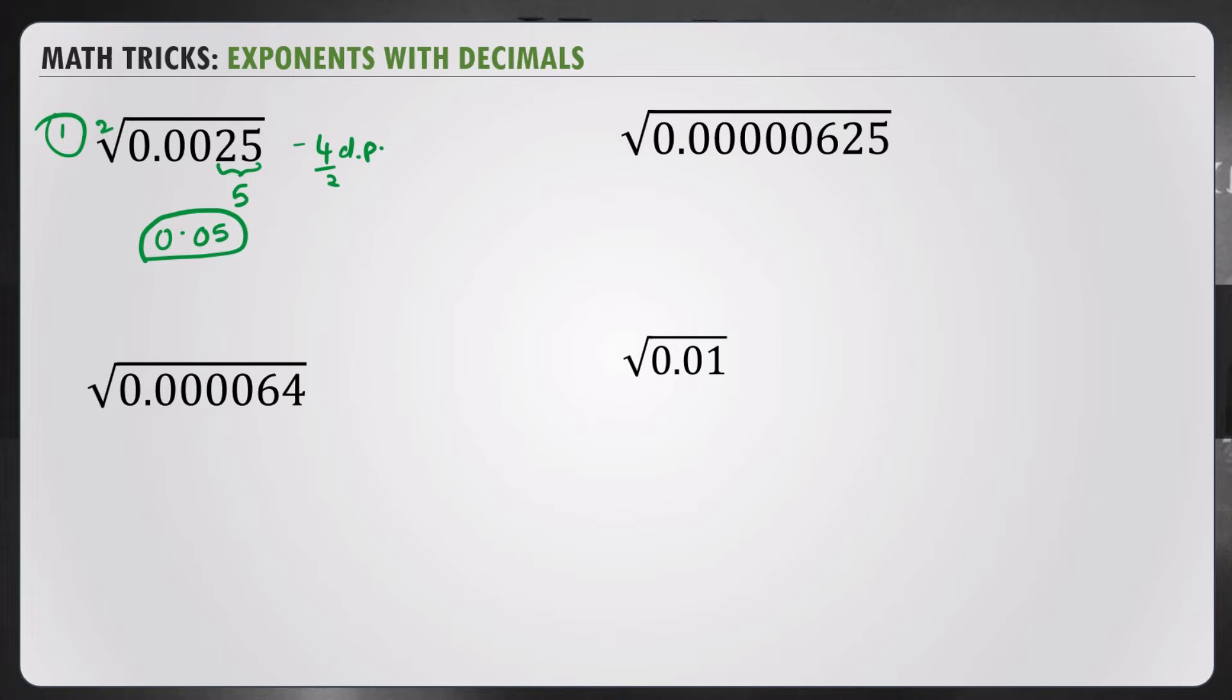Let's do the next one. Square root of 0.000064. The last two digits are 64. The square root of 64, we know, is 8. Number of decimal places, 1, 2, 3, 4, 5, 6. We have 6 decimal places. Since it's a square root, we divide by 2. So, your answer should have 3 decimal places. So, the answer will be 0.008. Simple as that.